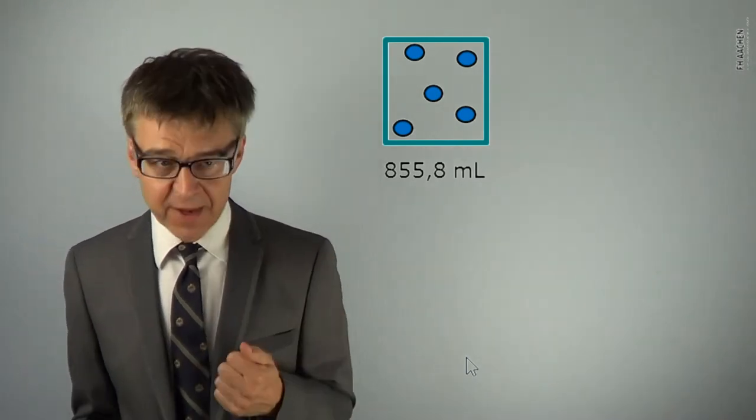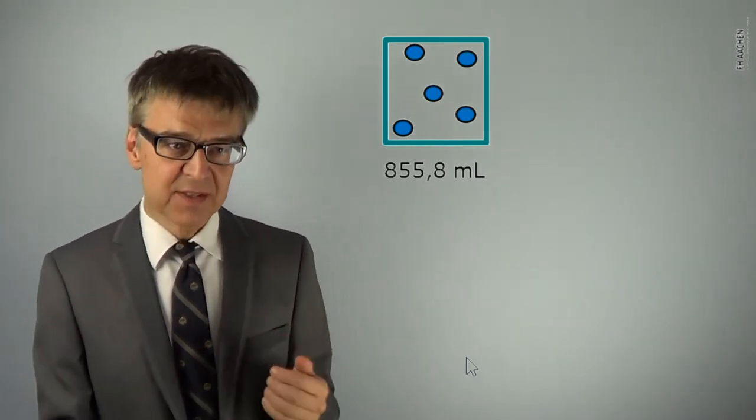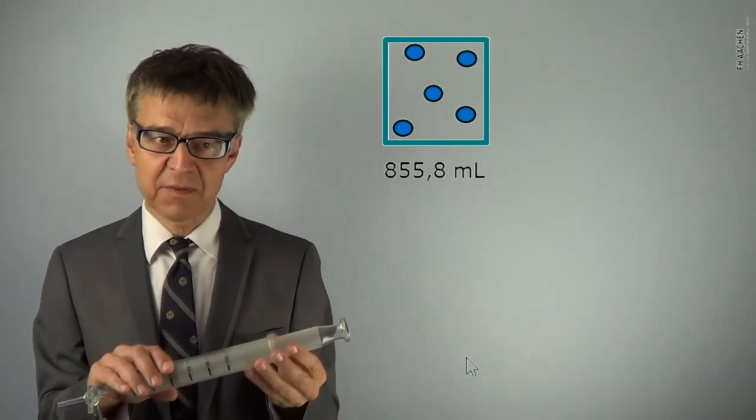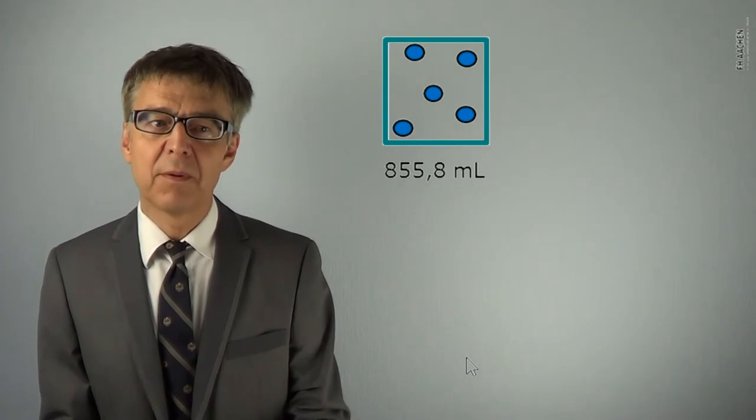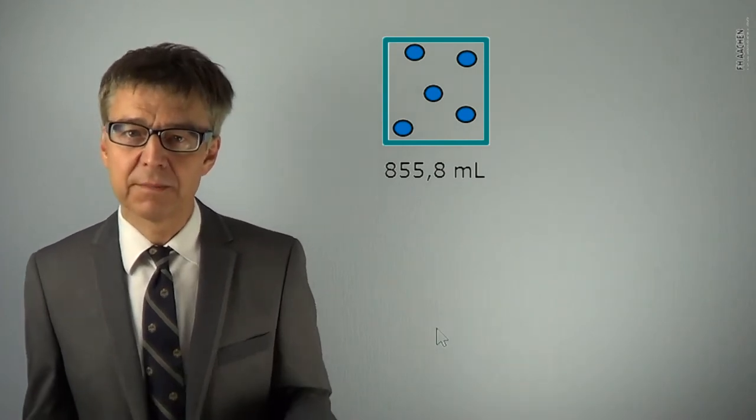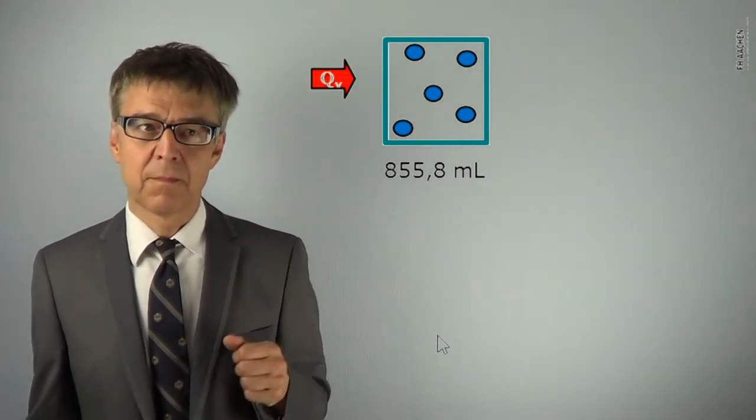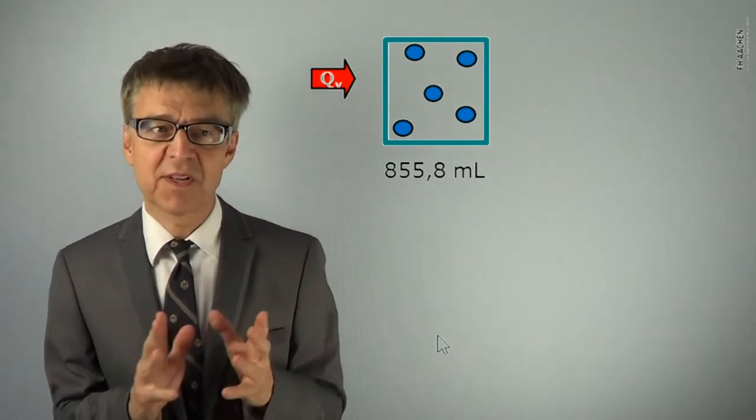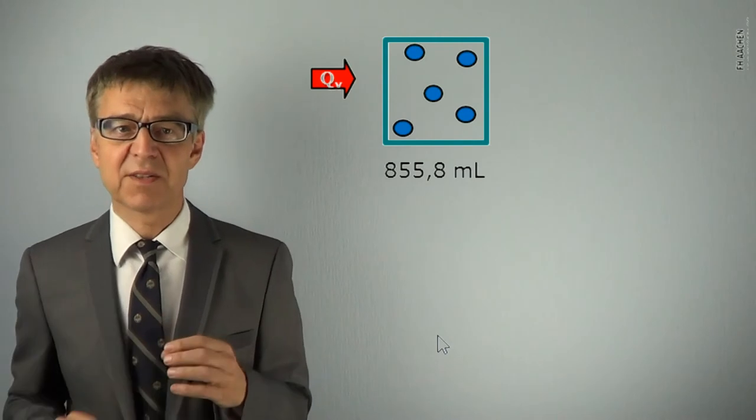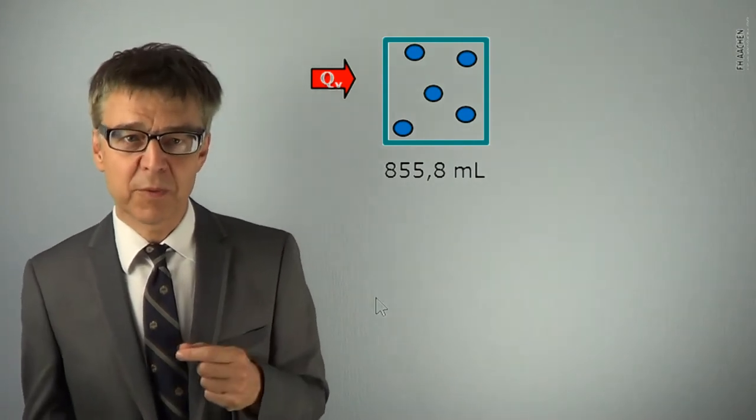We want one gram of air, that is 855.8 mL, to warm up by 1 K. The amount of heat required depends on whether the process is carried out in an isochoric or an isobaric way.